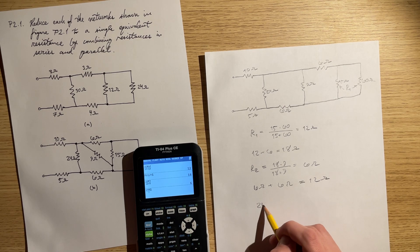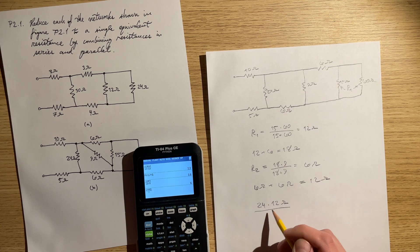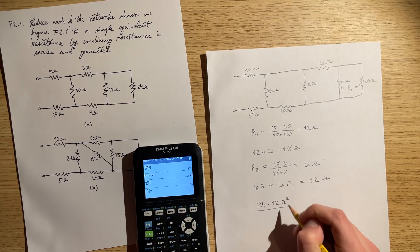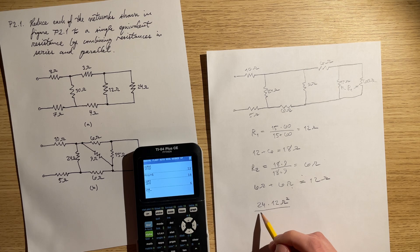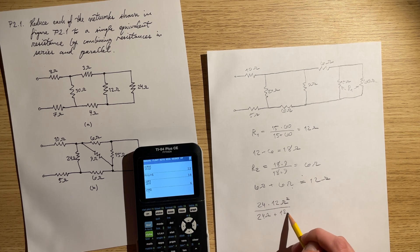24, 24 times 12 ohms. I'm just going to erase that. You can write the units as you want. That's what the units are going to be. This one, 24 ohms plus 12 ohms.